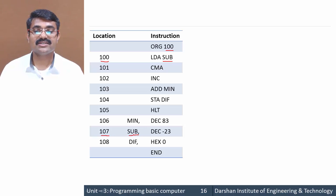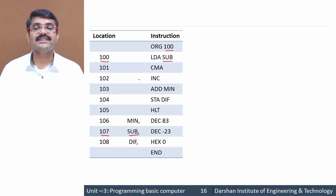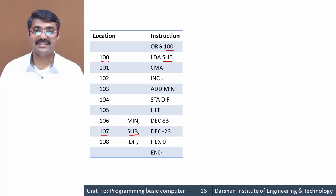At address 107 we have DEC -23, meaning the pseudo instruction will store the corresponding binary of -23 into location 107. The next instruction at 101 is CMA — complement the accumulator — so the content at address SUB is loaded into the accumulator and complemented. Then INC increments the accumulator content by one.